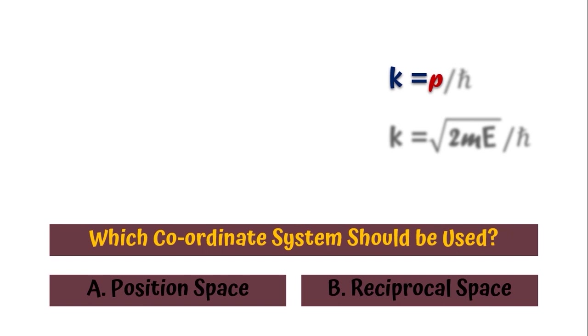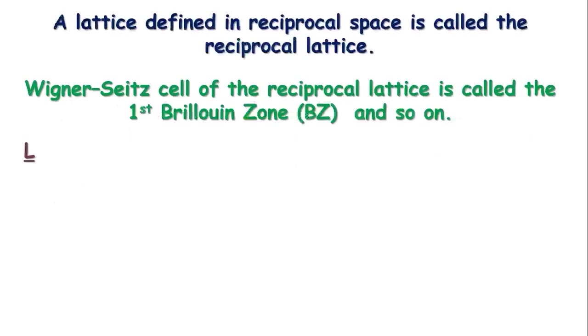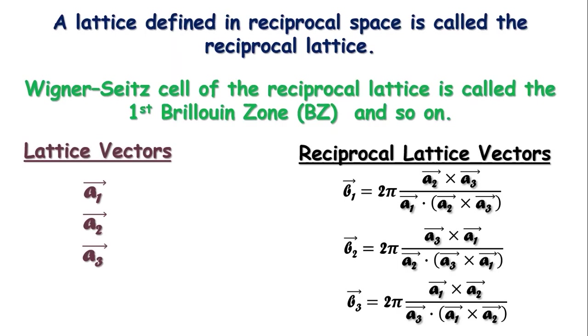As we have defined position in real space in terms of lattice vectors a1, a2, and a3, in k space too, we have three lattice vectors b1, b2, and b3 defined as b1 equal to 2 pi a2 cross a3 divided by the volume, b2 equal to 2 pi a3 cross a1 divided by the volume, and b3 equal to 2 pi a1 cross a2 divided by the volume. Applying this, we can calculate the structure of the reciprocal lattice.